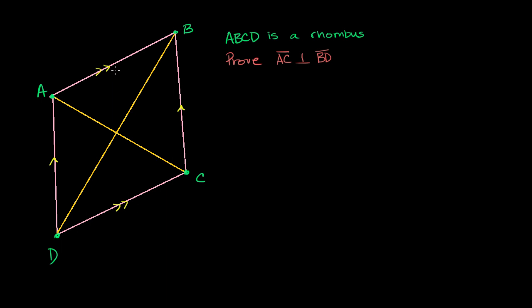And in a rhombus, not only are the opposite sides parallel, it's a parallelogram, but also all of the sides have equal length. So this side is equal to this side, which is equal to that side, which is equal to that side right over there.